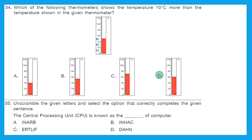Question 35: Unscramble the given letters and complete the sentence: 'The central processing unit is known as the ___ of the computer.' Option A unscrambles to 'brain,' B gives 'chain,' C gives 'filter,' and D gives 'hand.' The correct answer is option A — brain.